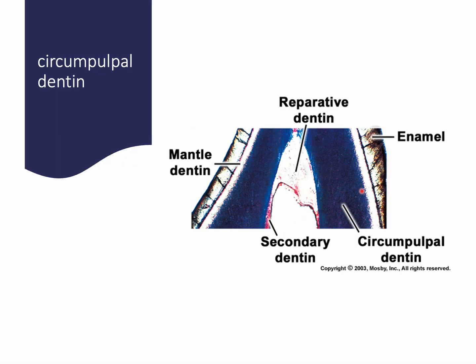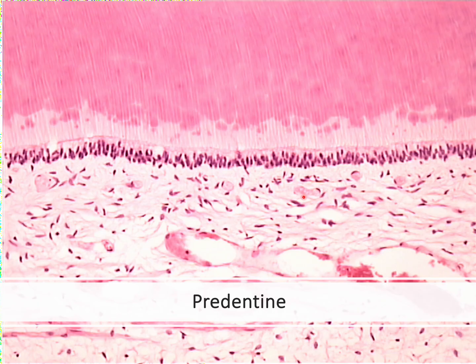The circumpulpal dentine is the bulk dentine between the mantle dentine and the predentine. This is where the primary curvature occurs — primary dentine formation — and it is uniform: same shape, same color, with no notable changes to describe inside this dentine.